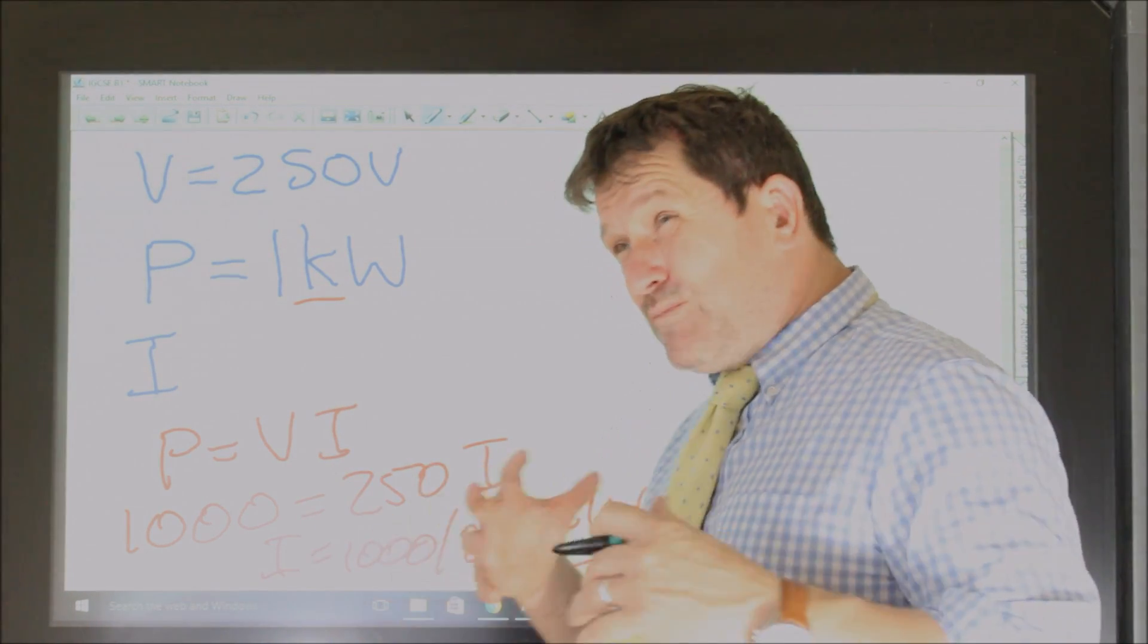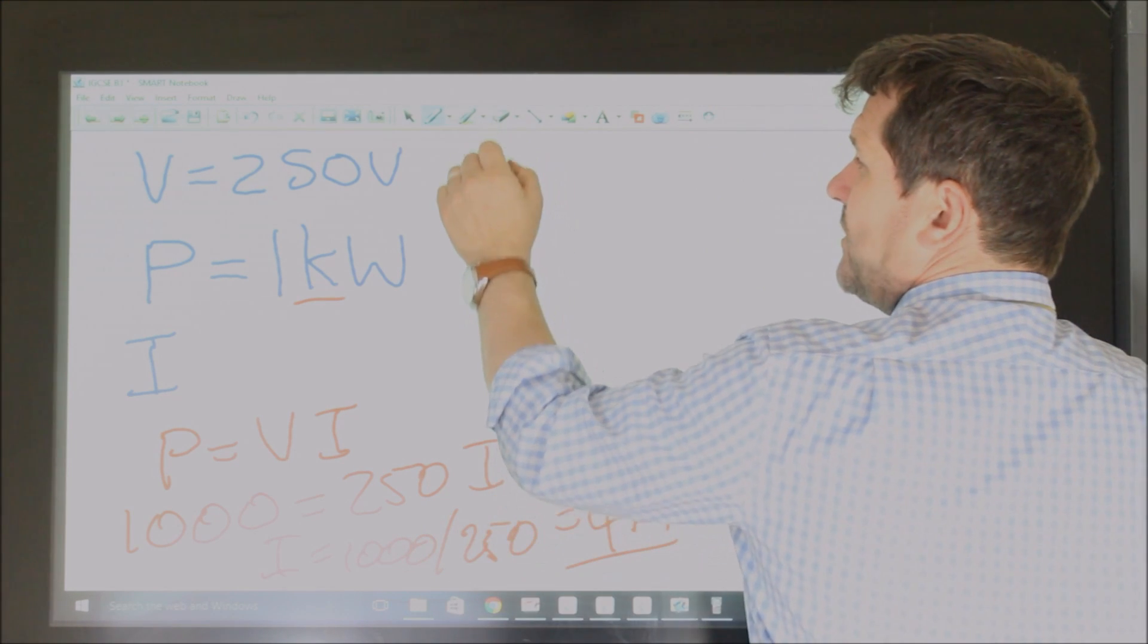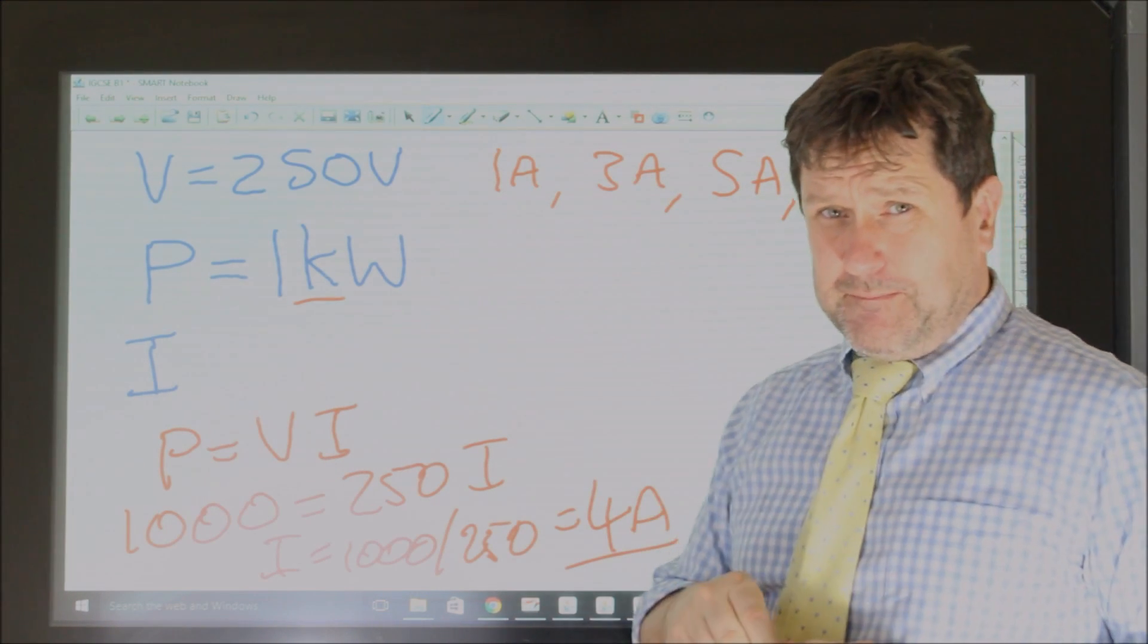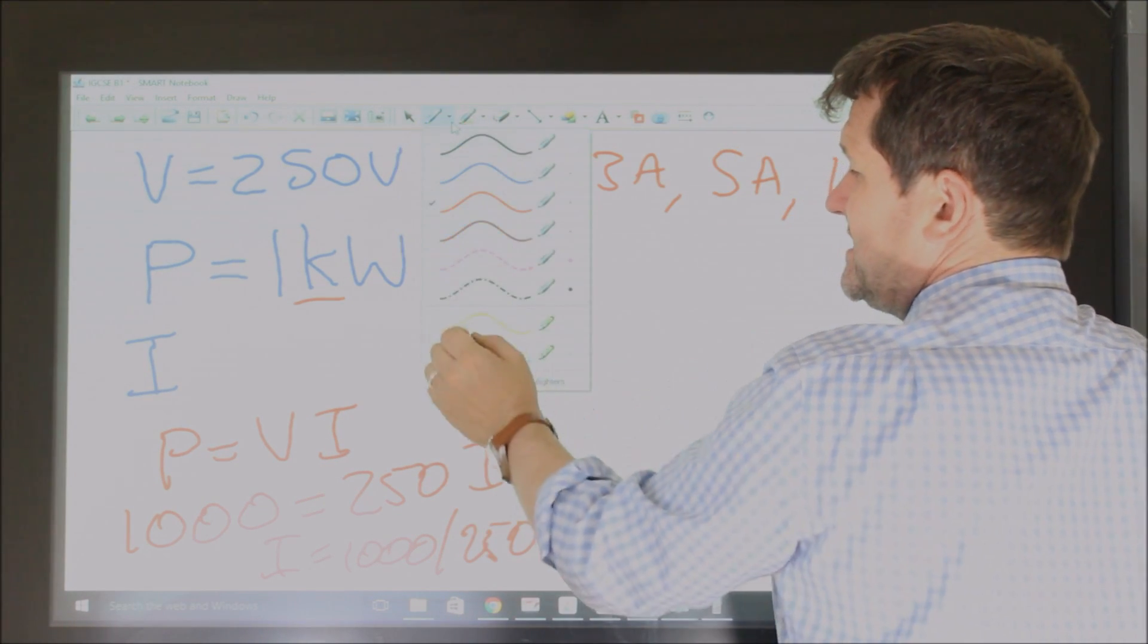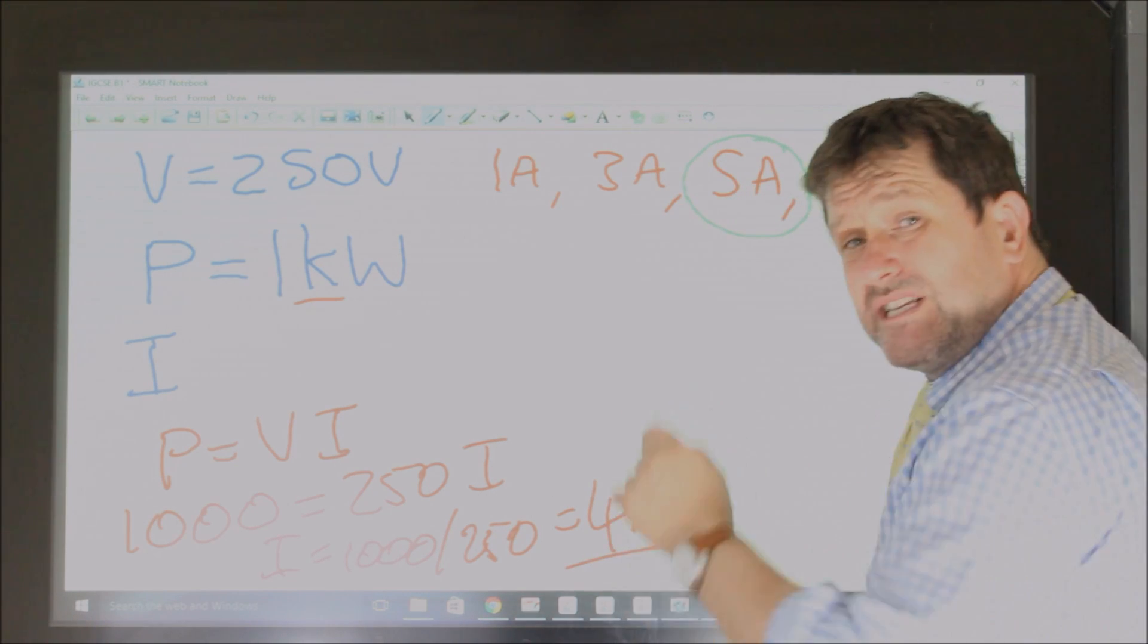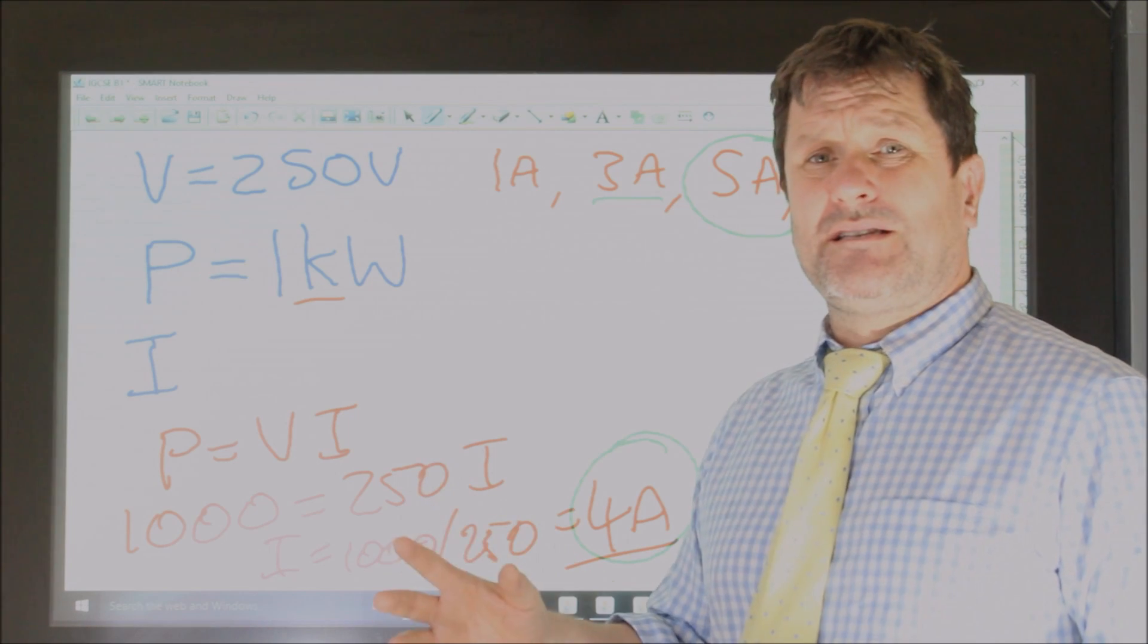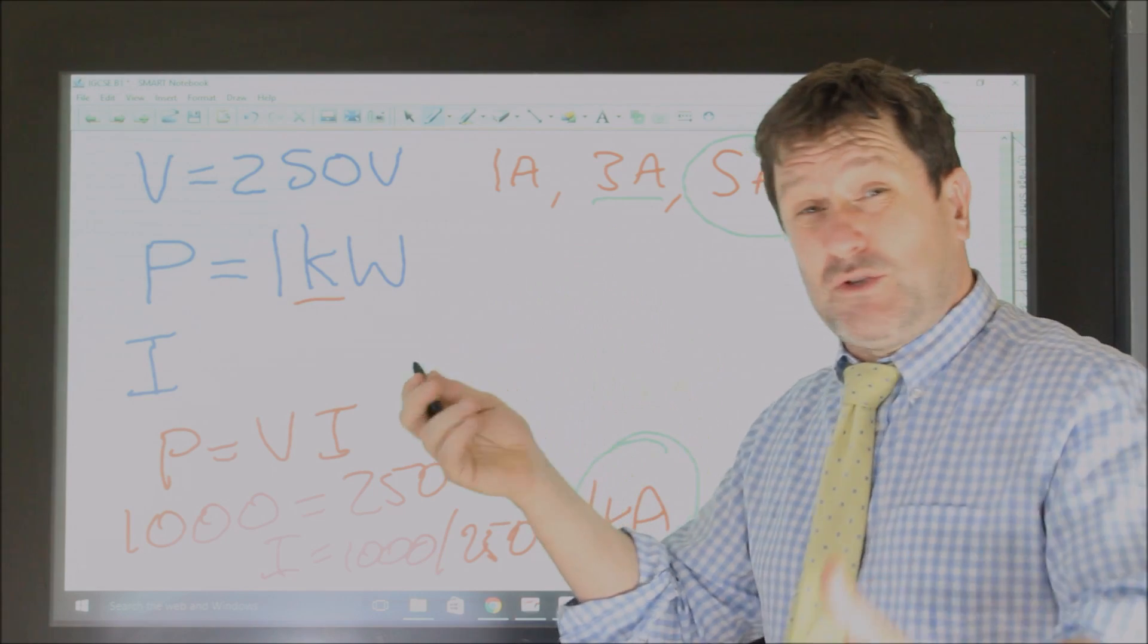The next question would likely be, which fuse would you therefore put into it? And they might say one amp, three amp, five amp, or thirteen amp. So they would say pick which fuse you put in and say why. Now hopefully you realise the correct fuse in this instance is a five amp fuse, because when it's flowing safely this appliance uses four amps, and therefore a three amp fuse would melt straight away whilst it was being safely used. So that's too small, it would just melt straight away.